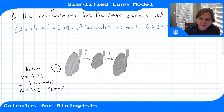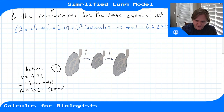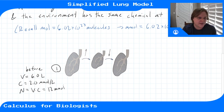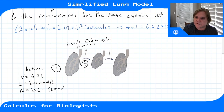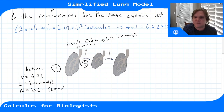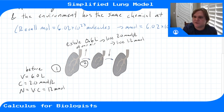At step 2, we exhale 10% of our lung's air — 0.6 liters. Assuming our air is well-mixed, we're losing 2.0 millimoles per liter times 0.6 liters, which translates to losing 1.2 millimoles of this chemical. We just multiply the volume we lose by the concentration, and that gives us how many moles of that chemical we lose as we exhale.